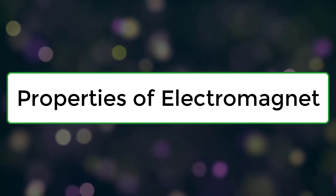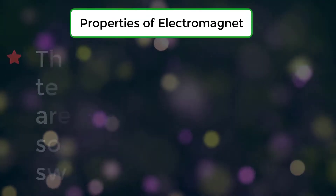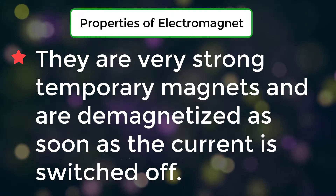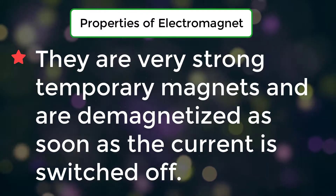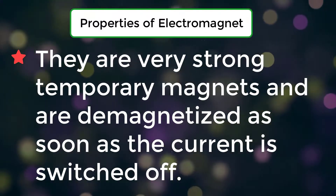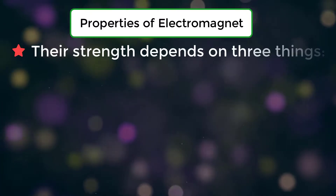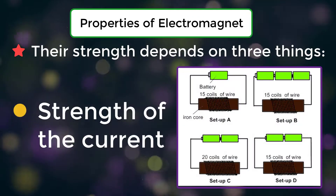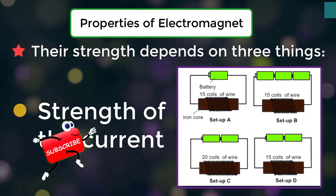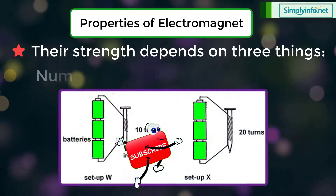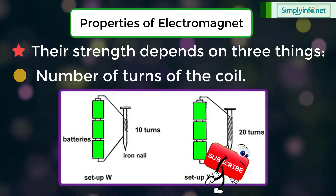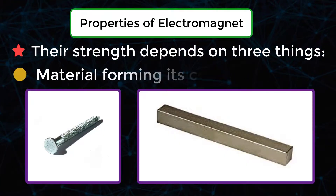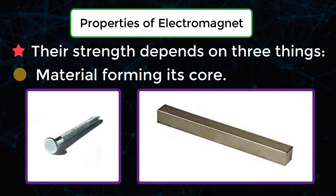Properties of Electromagnet: They are very strong temporary magnets and are demagnetized as soon as the current is switched off. Their strength depends on three things: the strength of the current, the number of turns of the coil, and the materials forming its core.